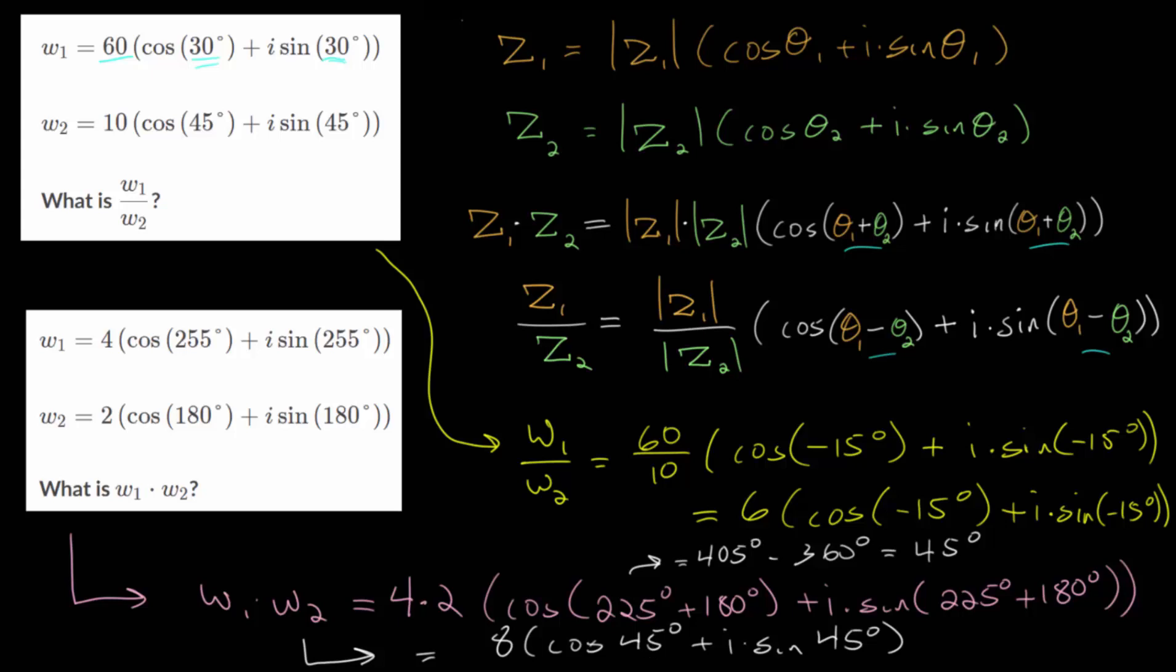One way to check these is to convert everything to rectangular form, carry out the multiplication or division using that arithmetic, and compare it to the answers we got here. In both cases, we should get the exact same answers, though admittedly that path of checking is a little bit tedious, but it can be done.